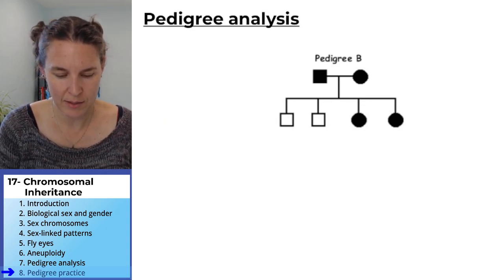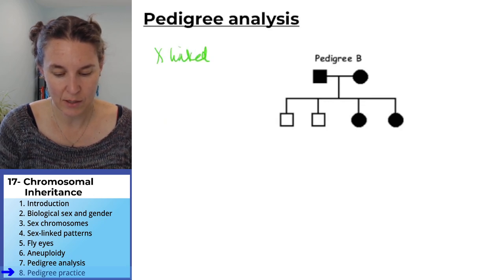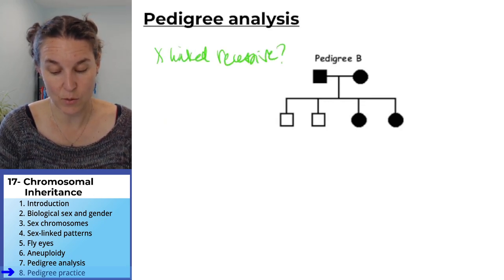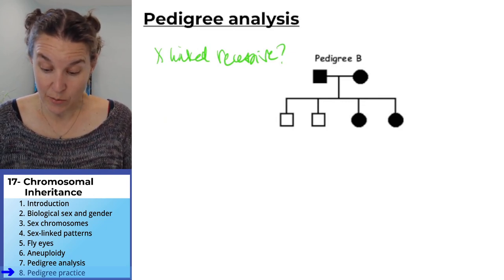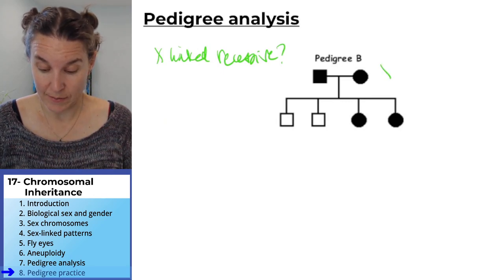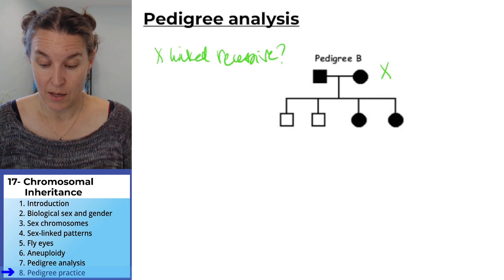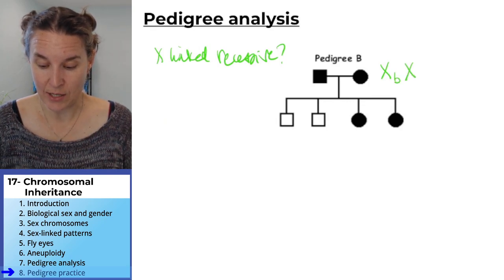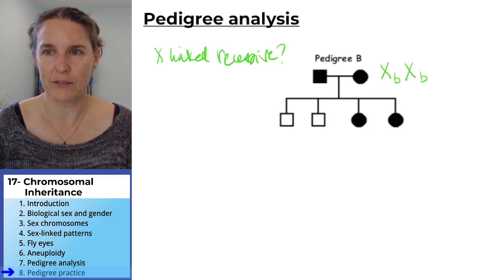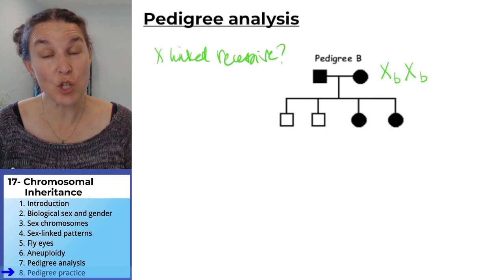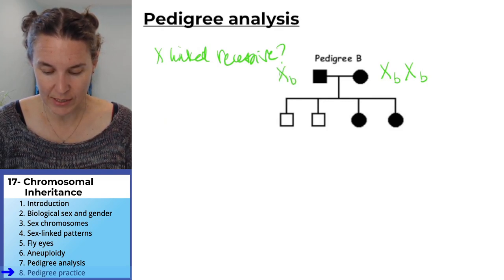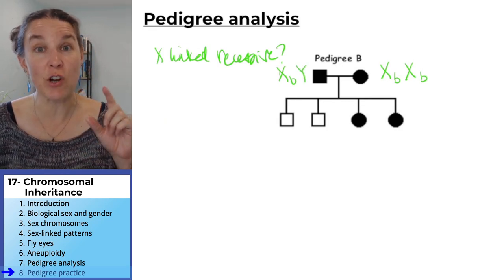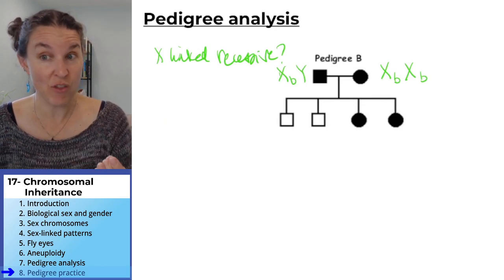Okay, let's try X-linked recessive. I'm skeptical. If it is X-linked recessive—I turned it into B's now, nobody knows why—she has to have two copies of the recessive allele, and he has to have the recessive allele with a Y chromosome. Do you agree that if they're going to express it, they have to have those genotypes?